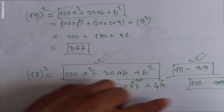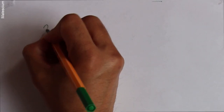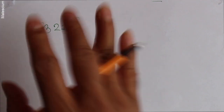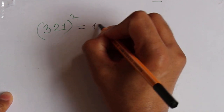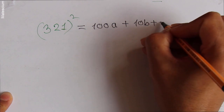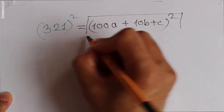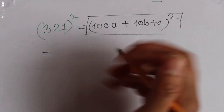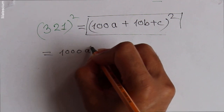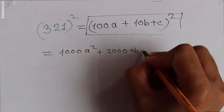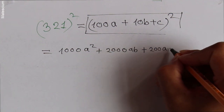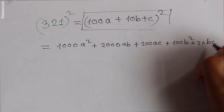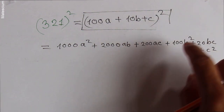I found another formula to calculate the square of three-digit numbers. Let's consider the three-digit number 321 squared. For three-digit numbers, the formula is (100A + 10B + C)². If we expand this formula, it gives us: 10000A² + 2000AB + 200AC + 100B² + 20BC + C².